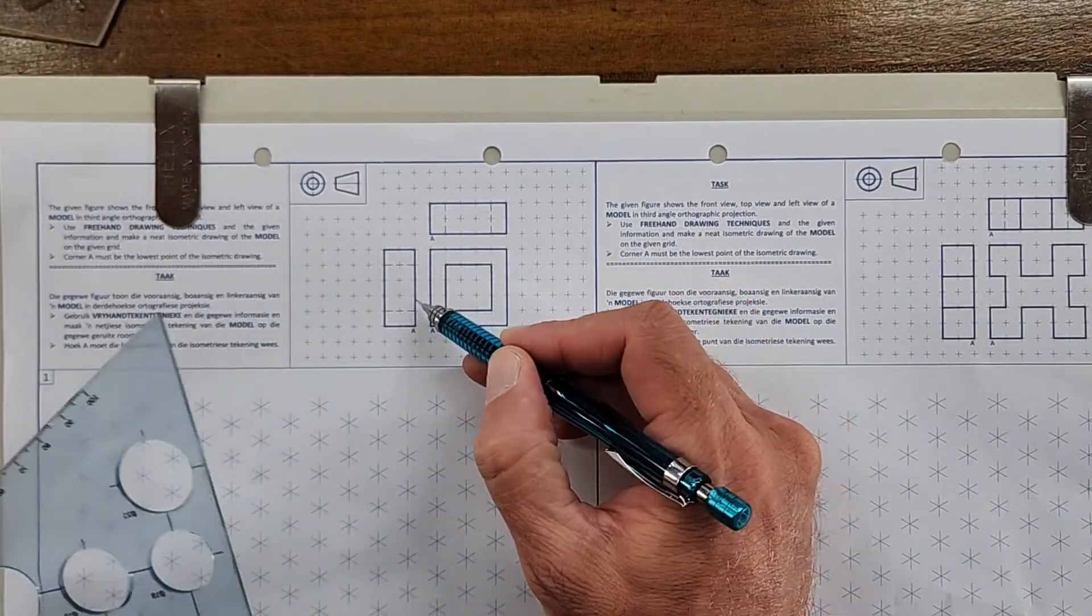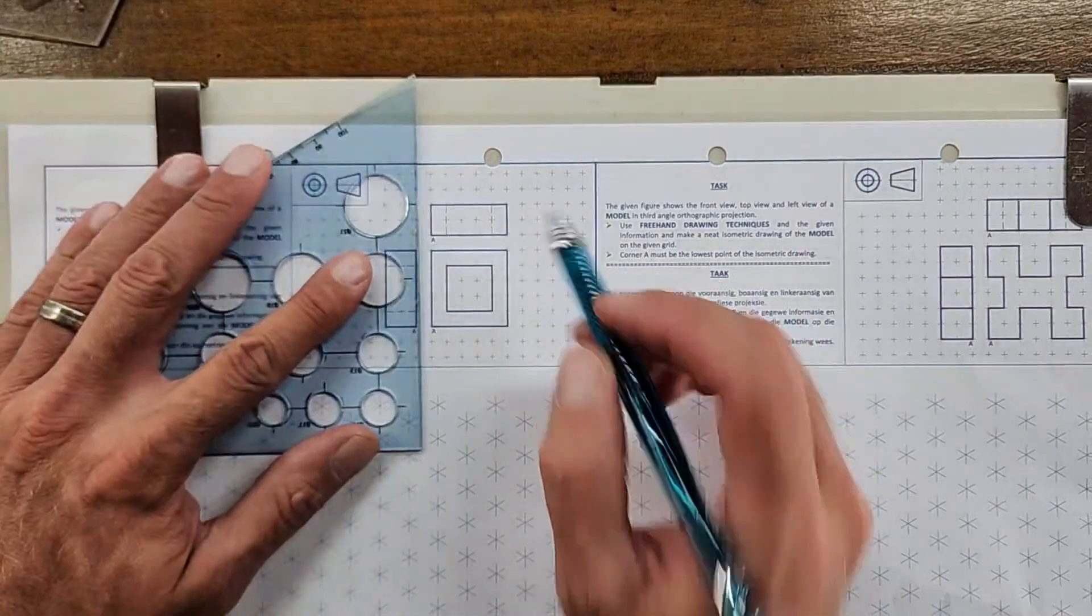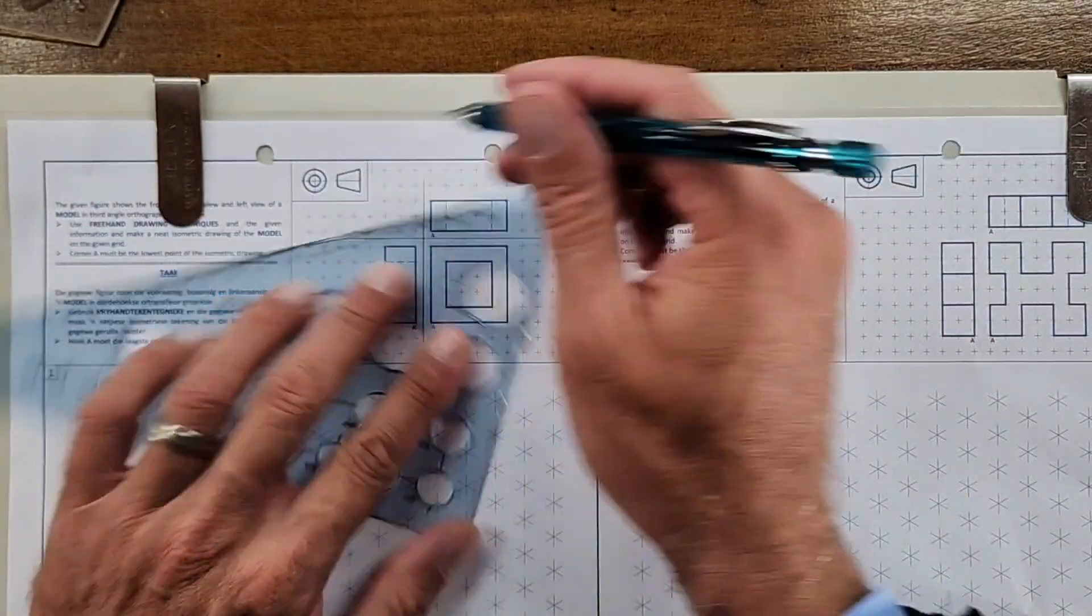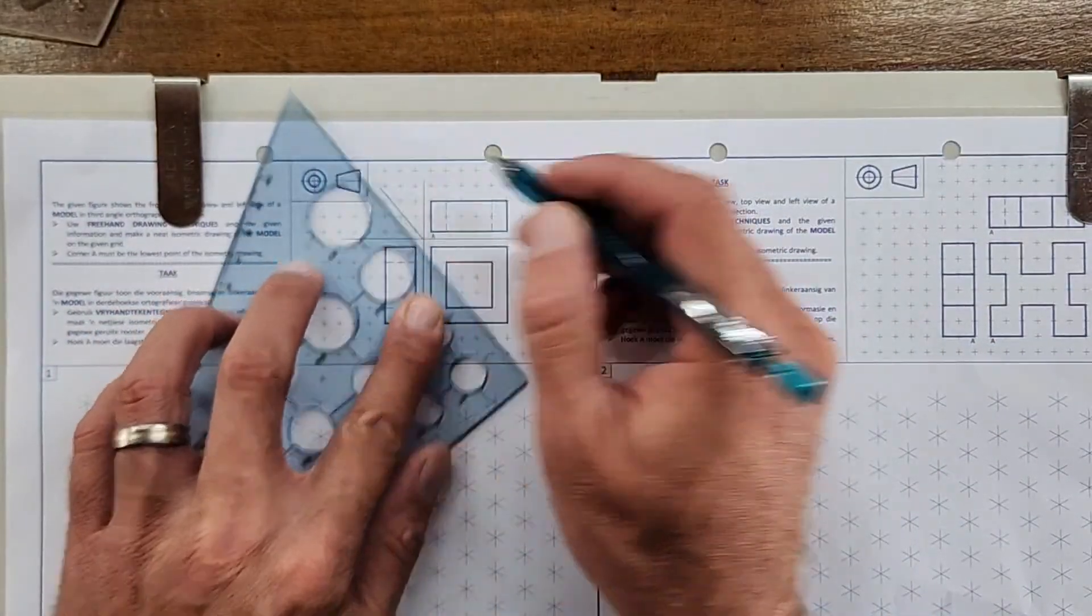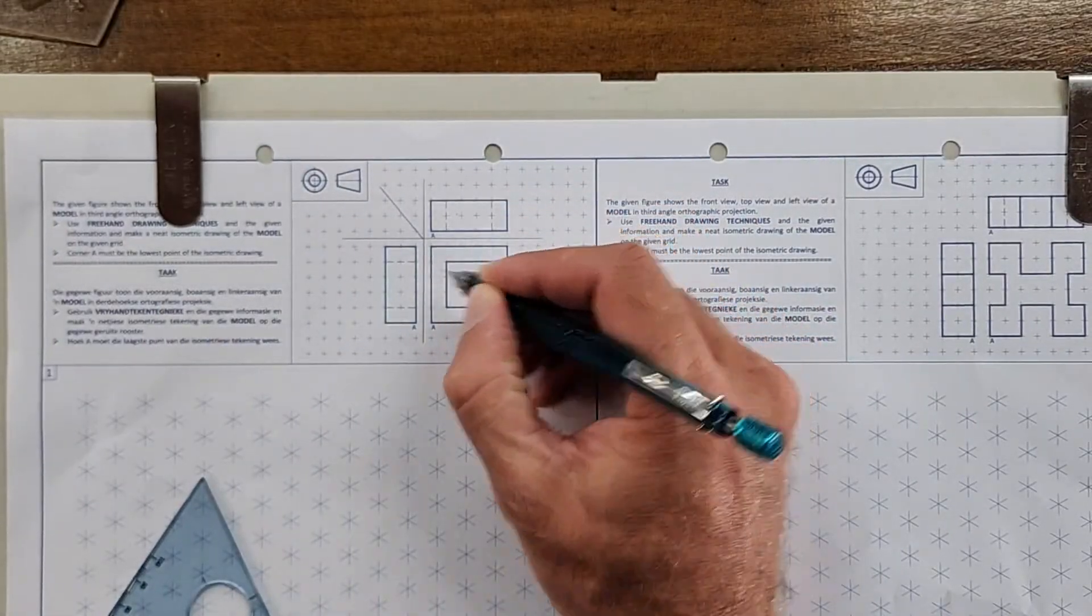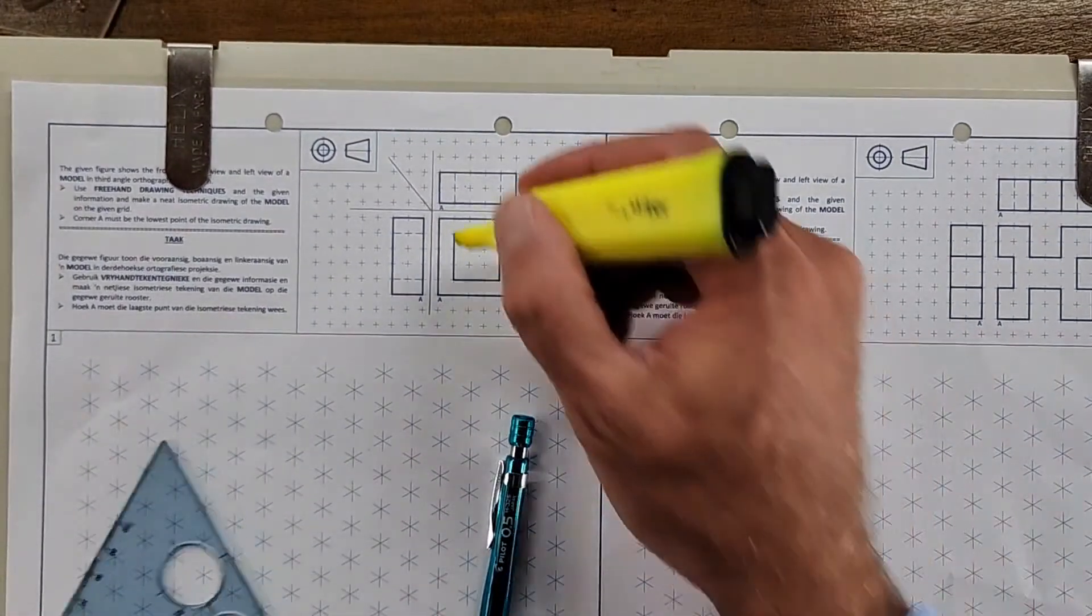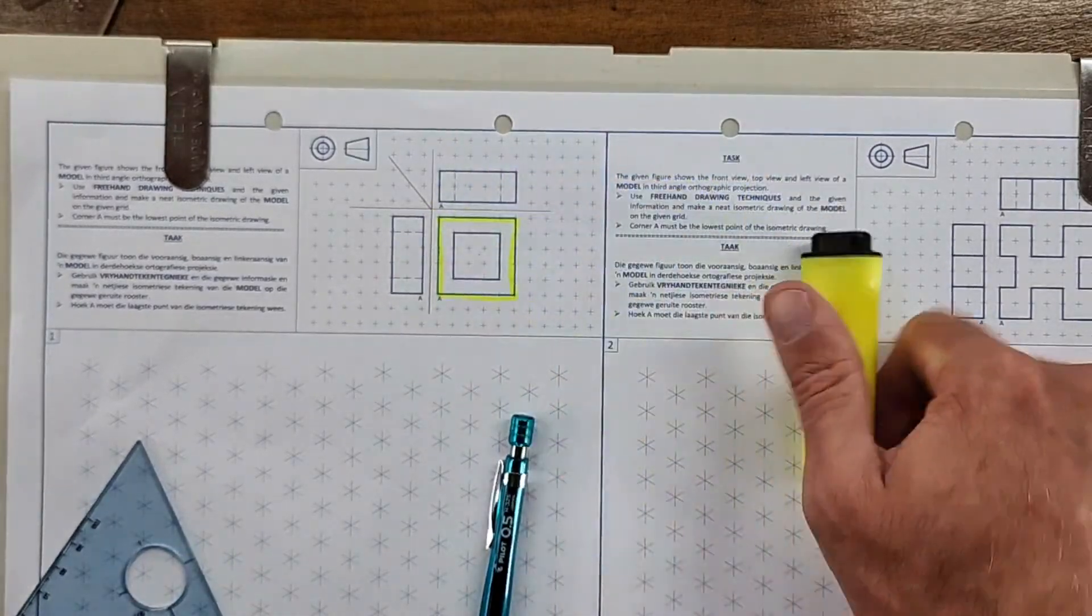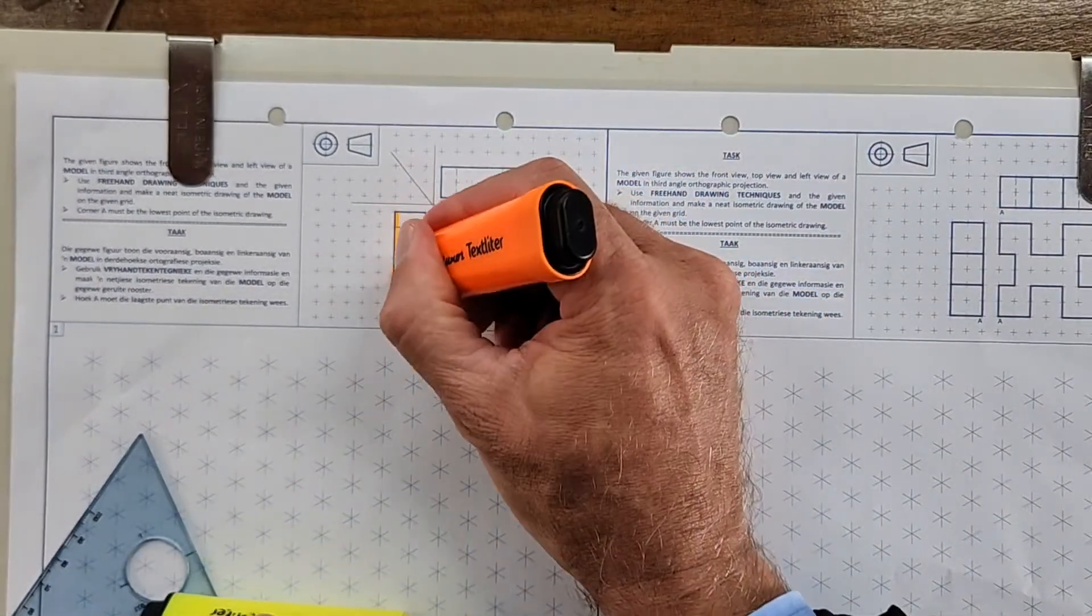Just remind yourself of that XY axis so that you remember that's the top, that's the front, that's the left. You can use some color coding if you want to. Let's say that's our front, that's our left.